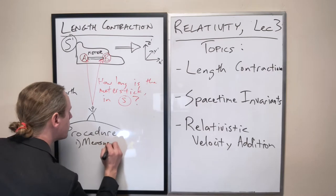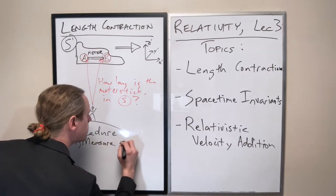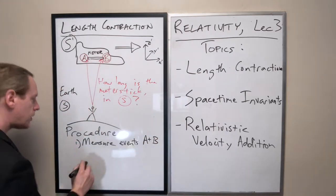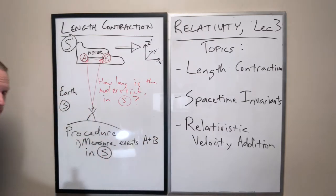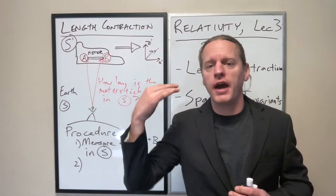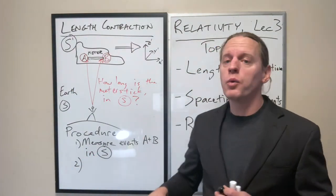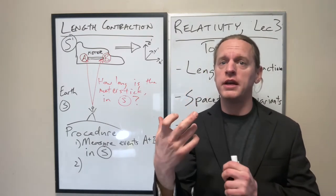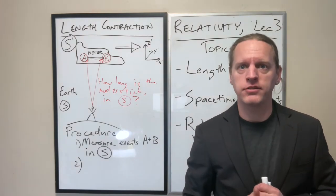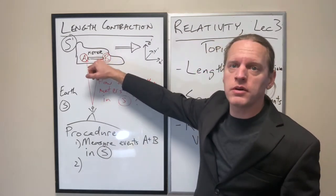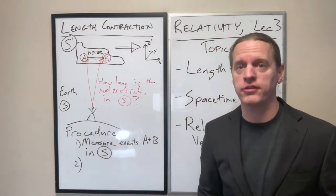So measure space time events A and B, and specifically those are in frame S. And then now, what we're going to do is we are going to, now that you have every coordinate X, Y, Z, and T, we're simply going to do a Lorentz transformation to express those coordinates in the primed frame. Does that make sense? So again, measure the coordinates in S, transform into coordinates in S prime.